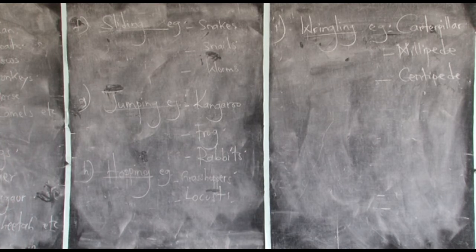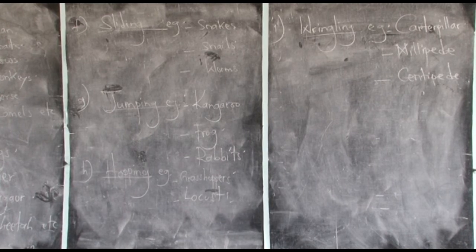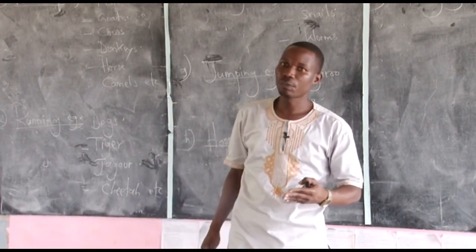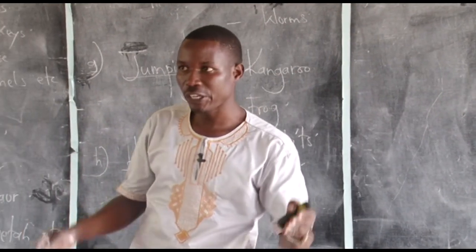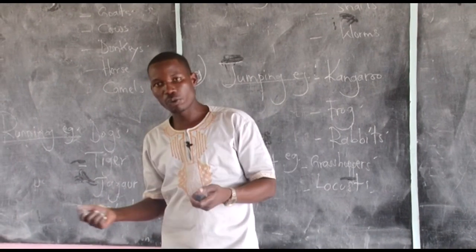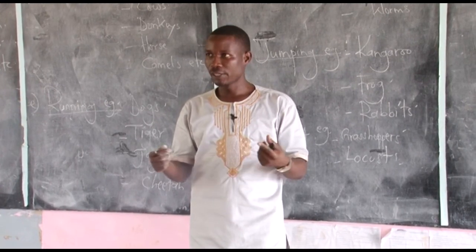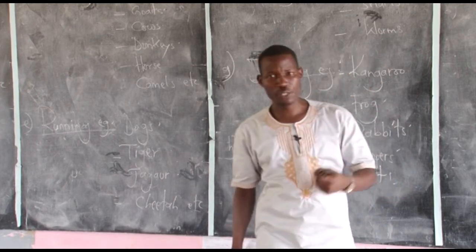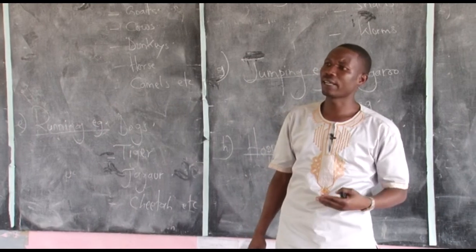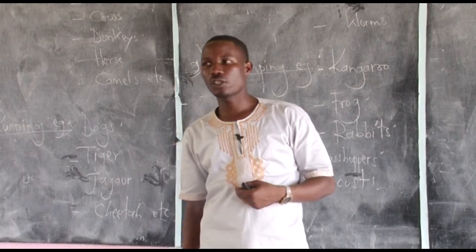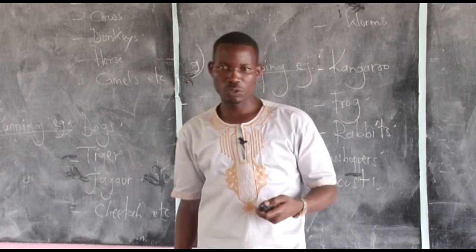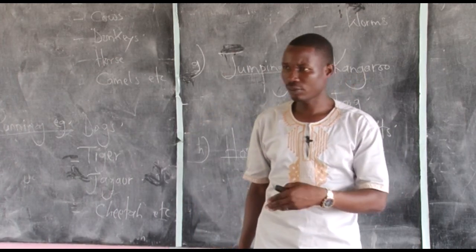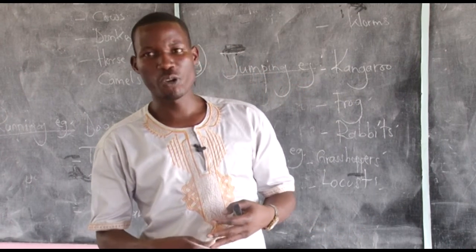We have looked at different modes of locomotion: crawling, flying, walking, running, sliding, jumping, hopping, wriggling, and swimming. Remember, locomotion is the movement of animals from one place to another. We looked at why animals move and this is very important. Thank you for your attention and your time. Keep following us on BTN TV, YouTube, Twitter, the Wisdom Center website, Facebook, and WhatsApp groups where you'll find revision questions. God bless you.